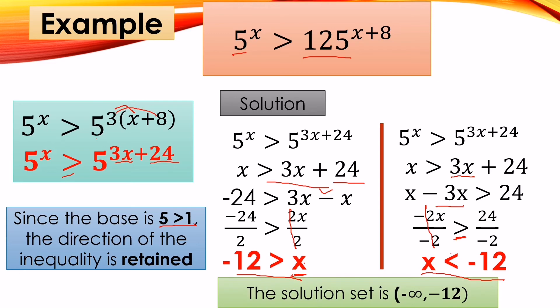Our solution set is (−∞, −12). We use an open parenthesis because −12 is not included in the solution set. Remember: when there is no 'equal to' (i.e., strictly less than or greater than), use open parenthesis; when there is 'less than or equal to' or 'greater than or equal to,' use a bracket.